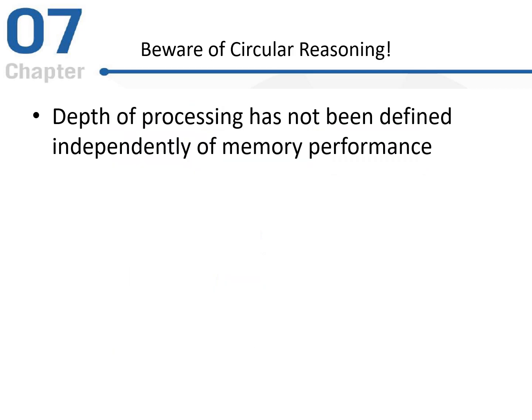Now, at this particular example, we have to be aware of what we call circular reasoning. The depth of processing has not really been defined independently of memory performance, meaning we could say that people in the fill-in-the-blank condition are doing better on the memory task because they processed things at a deeper level, or you could say they processed things at a deeper level because they performed better. You can't really separate one from the other, and with studies like this we have to be careful. When we can't tease apart performance from the actual effect itself, then we have something to be concerned about.